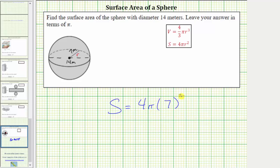Simplifying, seven squared equals 49. 49 times four equals 196 times pi gives us a surface area of 196 pi, and the units are square meters.